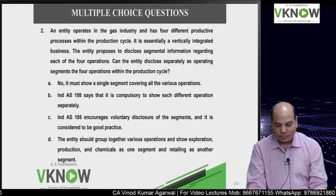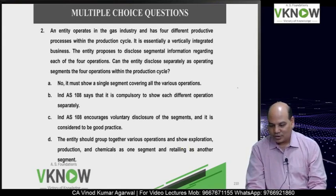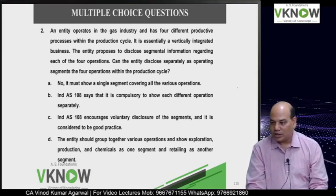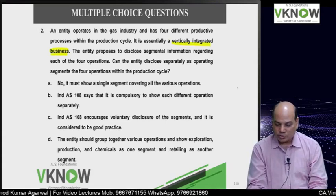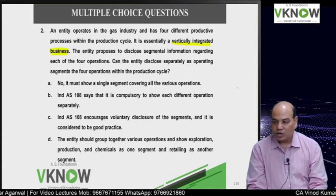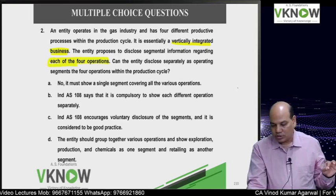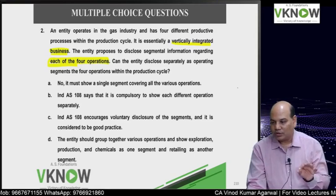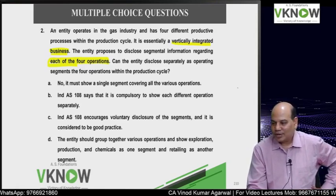One more chance - question 2. An entity operates in the gas industry and has four different productive processes. Within the production cycle, it is essentially a vertically integrated business. Vertically integrated means the output of one process becomes the input for the next. The entity proposes to disclose segment information regarding each of the four operations. Can the entity disclose separately as operating segments the four operations within the production cycle?